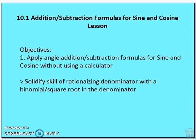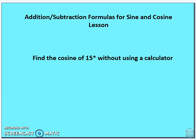Our objectives are to apply angle addition and subtraction formulas for sine and cosine without using a calculator. We may also do some solidification of skills — rationalizing the denominator with a binomial or square root in the denominator. The core question we want to address is: how do we find the trig function of a certain angle measure using the sum or difference of two angle measures that we know, without using a calculator?